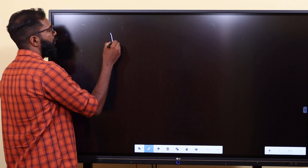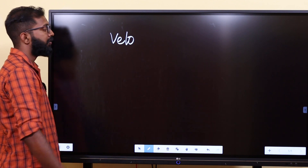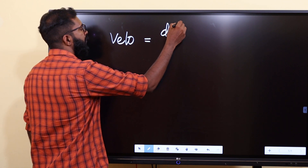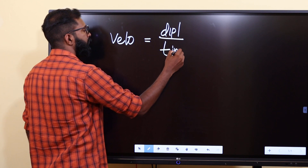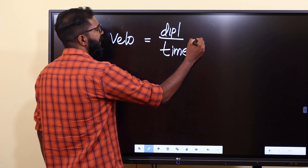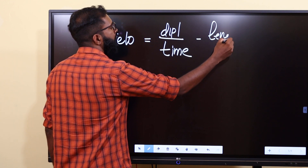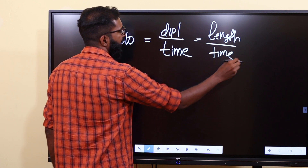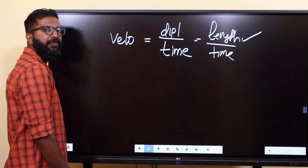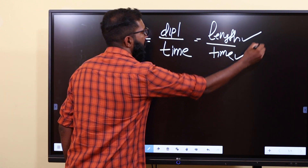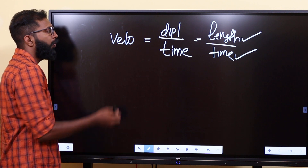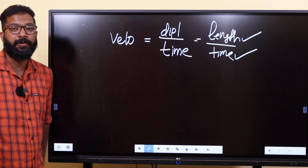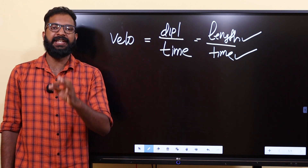For example, velocity is a derived physical quantity. Velocity is equal to displacement divided by time. Length is a fundamental physical quantity, and time is a fundamental physical quantity. Since velocity is formed from two fundamental quantities, velocity is a derived physical quantity.